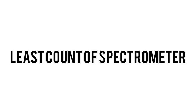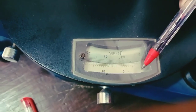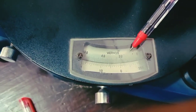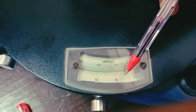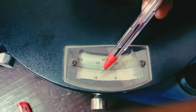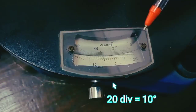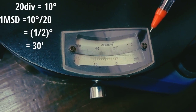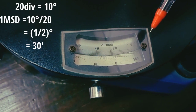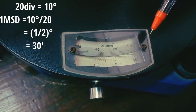Least count of spectrometer. Vernier 1 consists of two scales: the bottom scale is the main scale and the top scale is the vernier scale. On the main scale, there are 20 divisions between 0 and 10 degrees. So 20 divisions equal 10 degrees; therefore, 1 main scale division equals 10/20 = 1/2 degree, which equals 30 minutes.